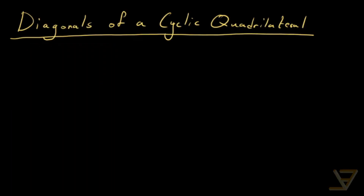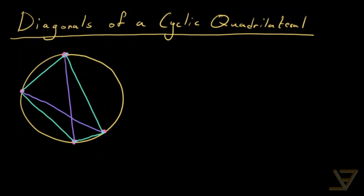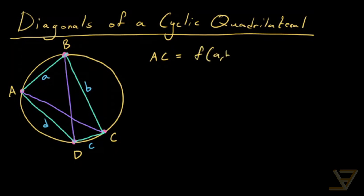Let's talk about the diagonals of a cyclic quadrilateral. Say we have a circle with four points on it — one, two, three, four — and we connect consecutive vertices to form a quadrilateral. We draw the diagonals and label the vertices A, B, C, D, calling the side lengths a, b, c, and d. Our goal is to find what AC equals as a function f(a, b, c, d) and what BD equals as a function g(a, b, c, d).